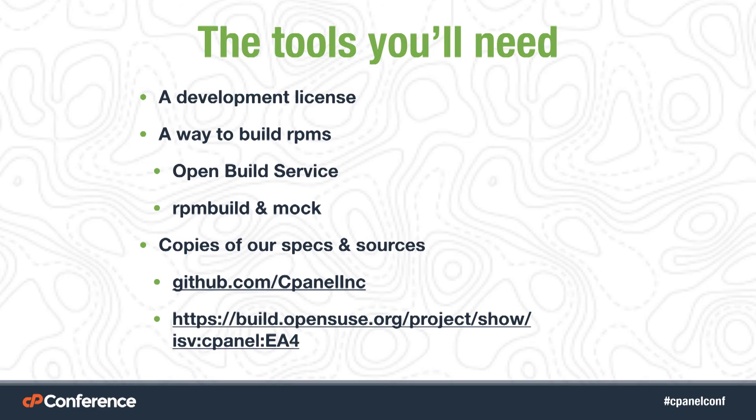Using OpenBuildService, you can automatically rebuild your RPMs against ours whenever we update them. So when we're working on a release, we upload it to OpenBuildService and can verify that your RPMs build against ours by essentially running a commit. The other tools you can use if you don't want to use OpenBuildService are RPMBuild and Mock. These are the classic tools for managing RPMs on a Red Hat system — they're well documented and very useful.